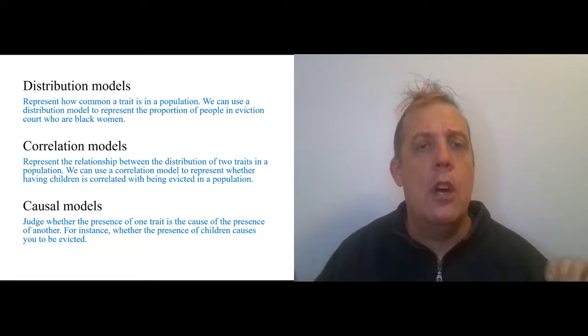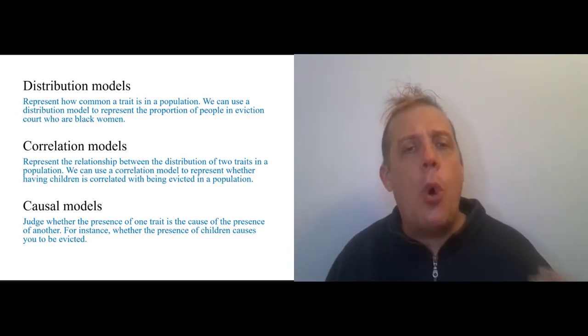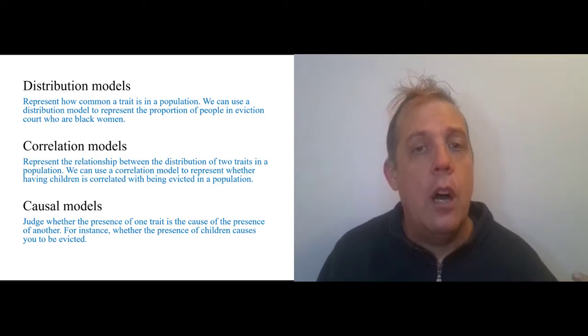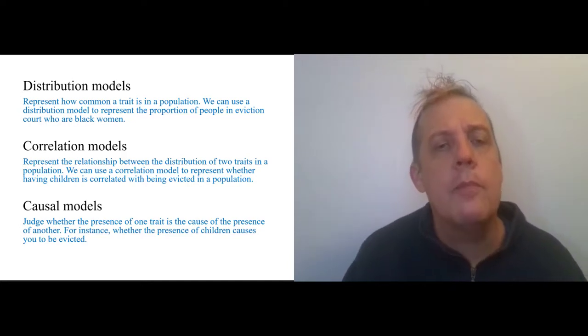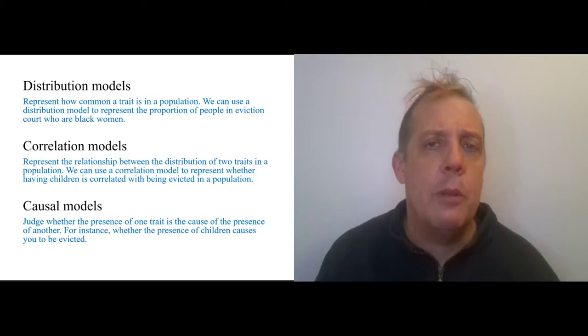The next step up is a correlation model. A correlation model actually involves two quantified categorical statements because a correlation is a relationship between two distributions. That might seem jargony or hard to get your head around, but once we practice it a bit, it will seem fairly simple. One correlation that Desmond points out is that having children in your family makes you more likely to be evicted.